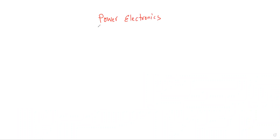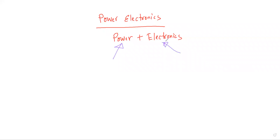Now let us have an idea of what power electronics is. We have two terms here: one is 'power' and the other is 'electronics.' You are familiar with both. This power is not muscle power - rather it is electric power. And electronics - power is the modifier and electronics is the noun. So we already have some ideas about electronics.